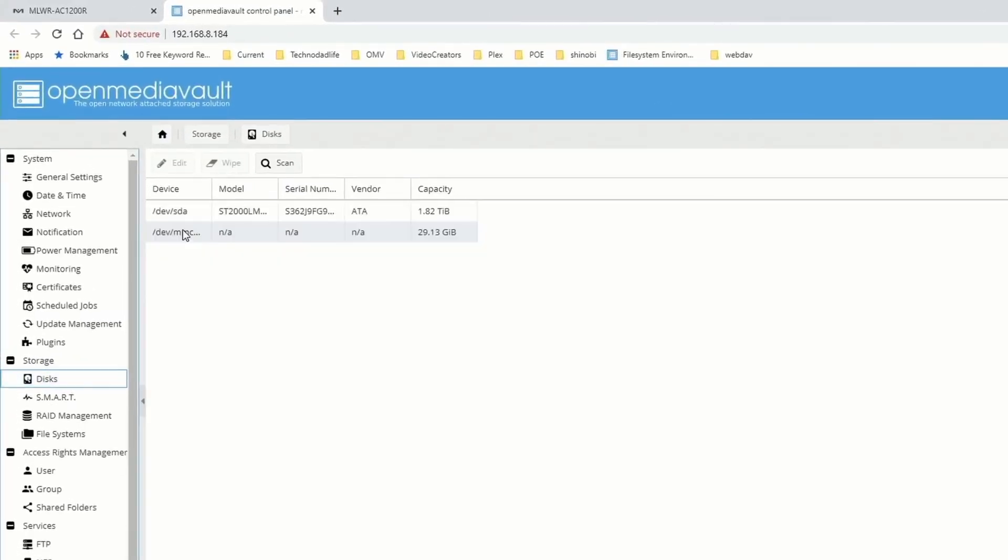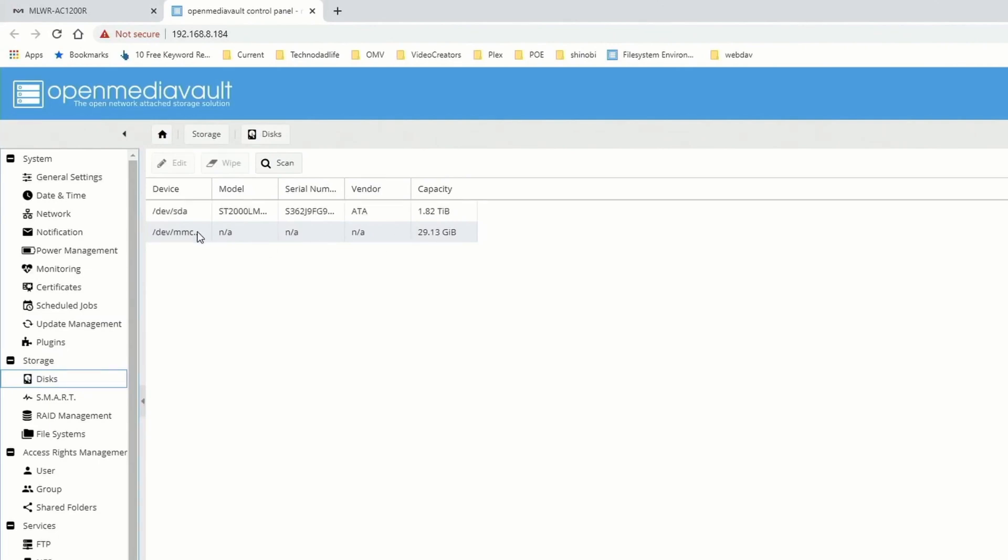We go to disks and here the MMC that you see here, this is my OS disk. And the SDA is my data disk where the data is still there but we can't access it yet. So we're going to show you how to add that back in without erasing anything.